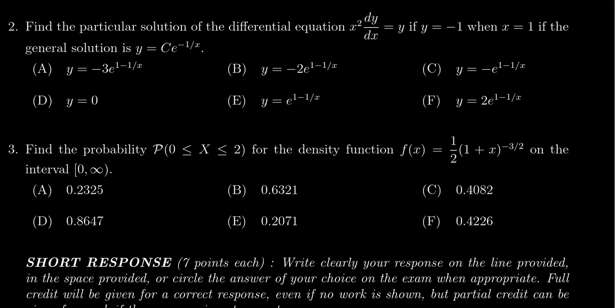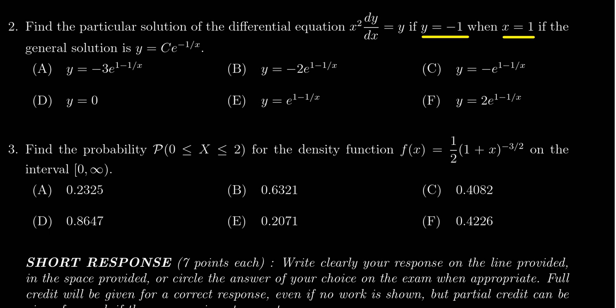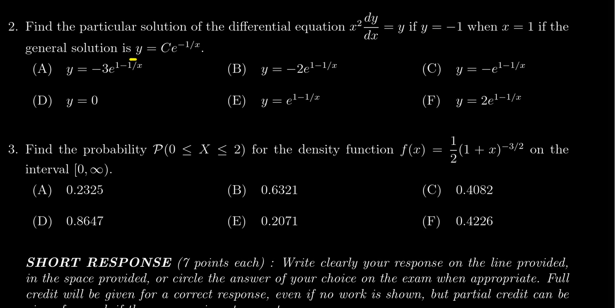In this video we provide the solution to question number two for practice exam number three for Math 1220. We're given a differential equation x² times y prime equals y, with initial value y equals negative one when x equals one. We also have the general solution to this differential equation, which we don't need to compute—we already know it.